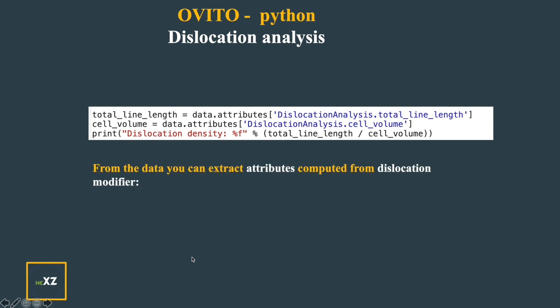Now you can extract the attributes computed from the dislocation modifier. So that is extracted as data dot attributes and the information you want to extract dislocation analysis dot total length or dislocation analysis dot cell volume and you store them in some variables.